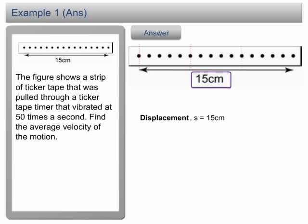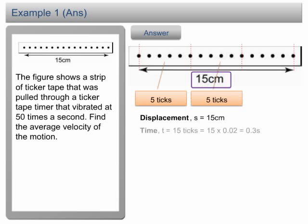In order to determine the time, we count the number of ticks. There are totally 15 ticks, equivalent to 0.3 seconds.